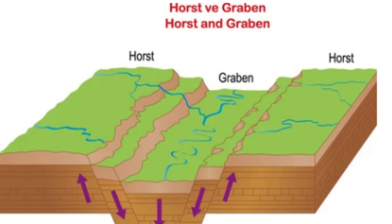Horsts and Grabens can also be found in areas of mountain building, where tectonic forces cause the earth's crust to be compressed and folded. In these areas, Horsts can form the core of a mountain range, while Grabens can be filled with sediment and become valleys between the mountains. Overall, Horsts and Grabens are important geological features that help us understand the complex processes that shape the earth's surface. They are formed by the movement of tectonic plates and can be found in a variety of different settings, from rift valleys to mountain ranges.